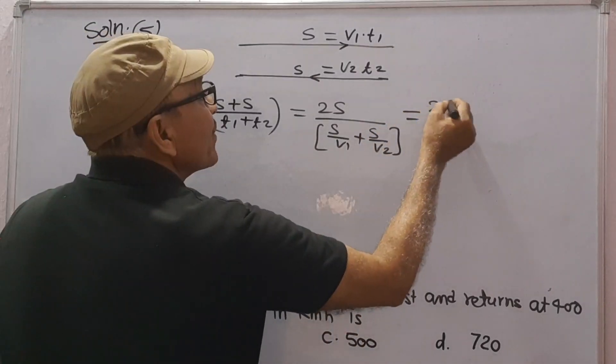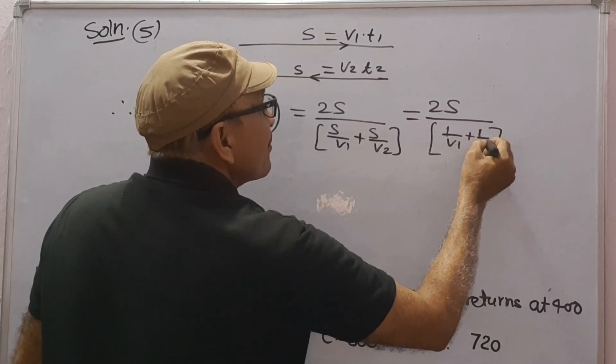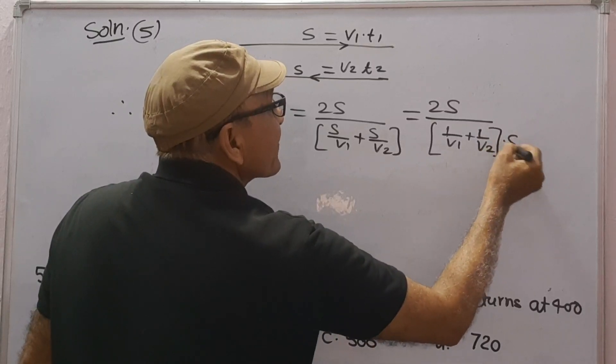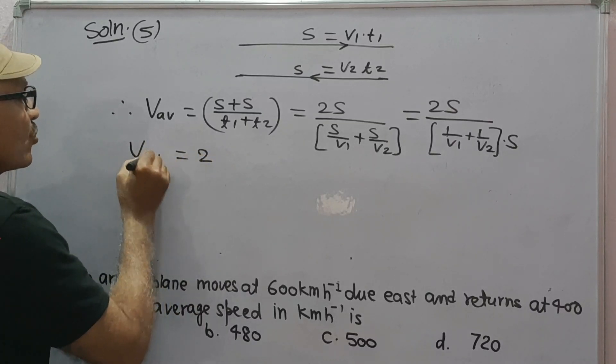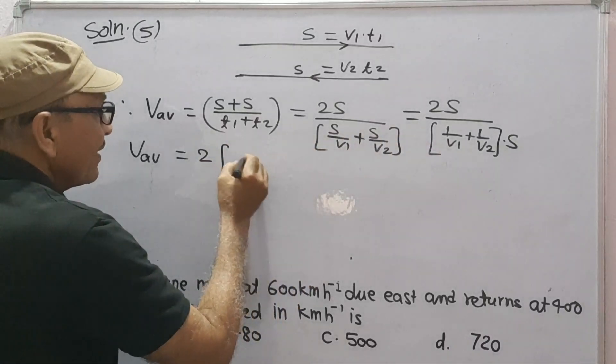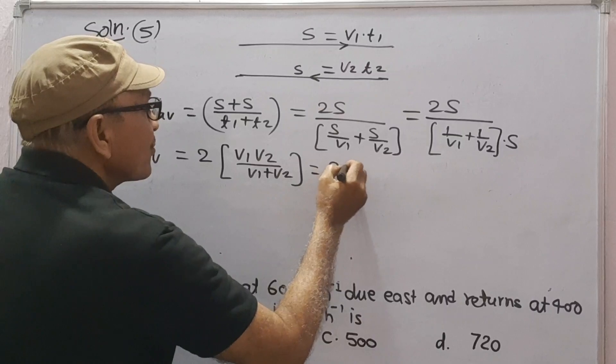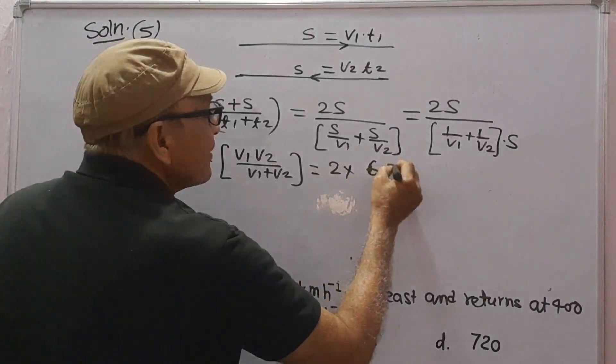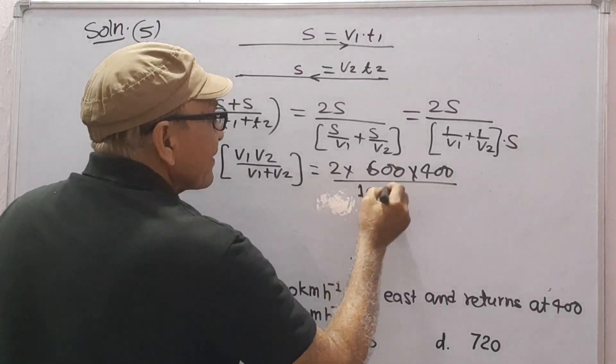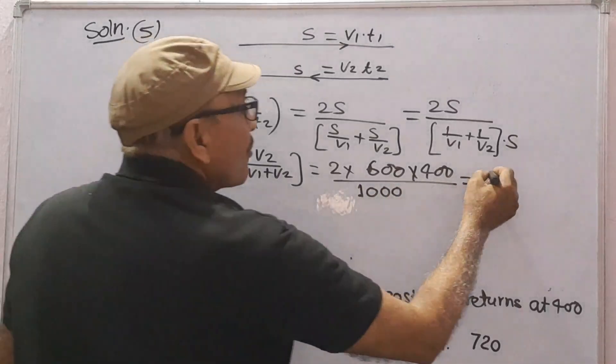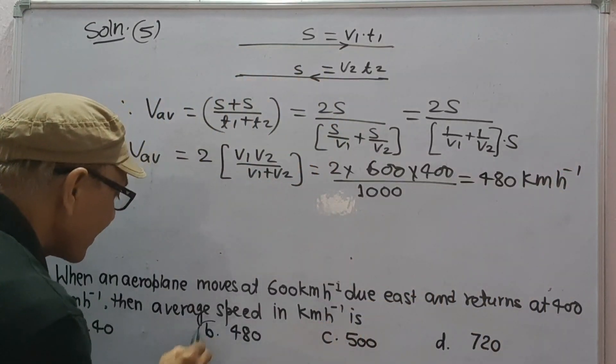This can be written as 2S upon 1 upon V1 plus 1 upon V2. So the average velocity will be equal to - S cancels out, we get 2V average is equal to 2V1 V2 upon V1 plus V2. Putting the values, we get 2 into 600 into 400 upon 600 plus 400 means 1000, which gives 480 km per hour. So the correct option will be B.